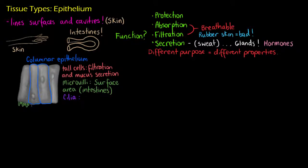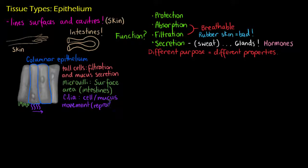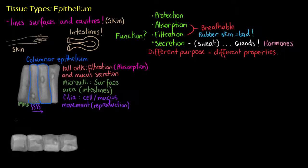The next structure we see on some columnar epithelial cells are called cilia. The cilia work in a similar fashion to a bacterial flagella. They beat in synchronisation with surrounding cells to propel away mucus or other cells — we see that in reproduction where we are trying to move those reproductive cells towards the egg. And also absorption.